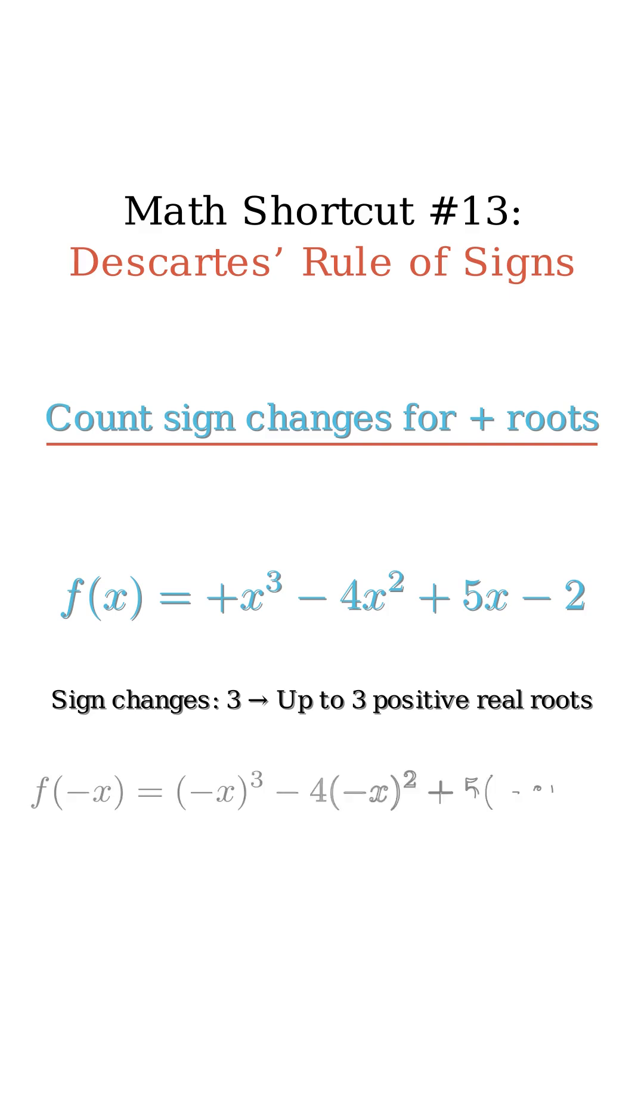Now plug in negative x. That is f of negative x. That becomes negative x cubed minus 4x squared minus 5x minus 2.